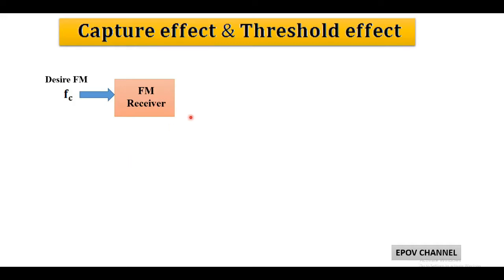Hello friends, welcome once again. In this session we are going to discuss major problems encountered in FM receiver. There are mainly two problems: first is capture effect and second is threshold effect.